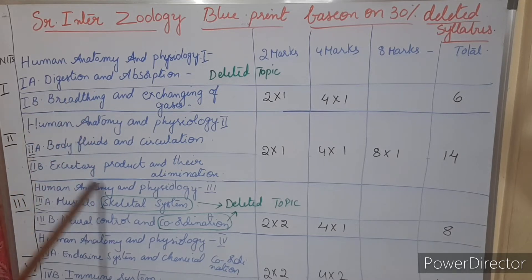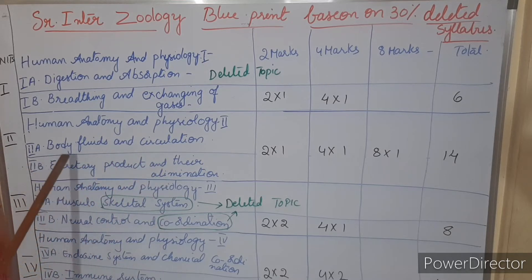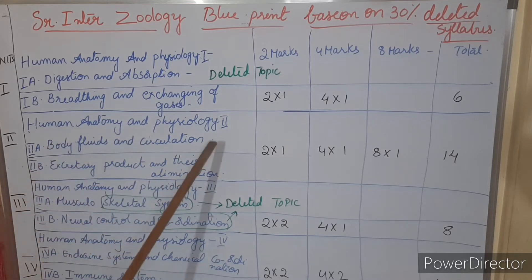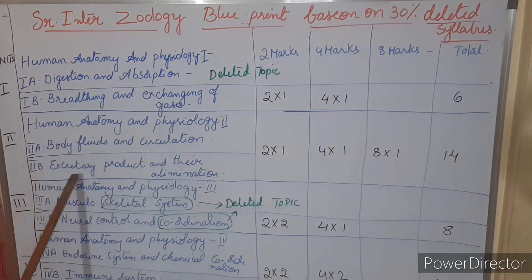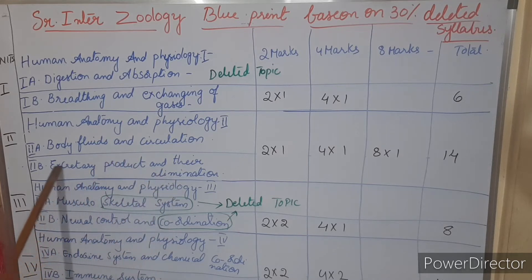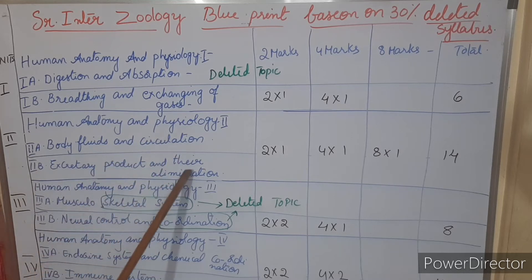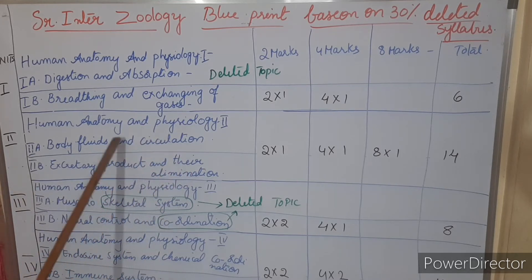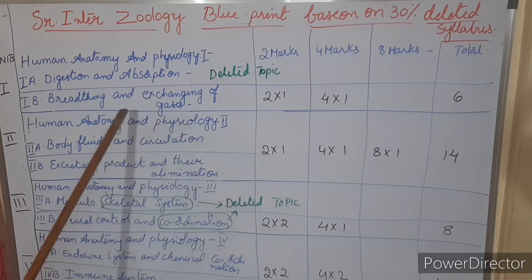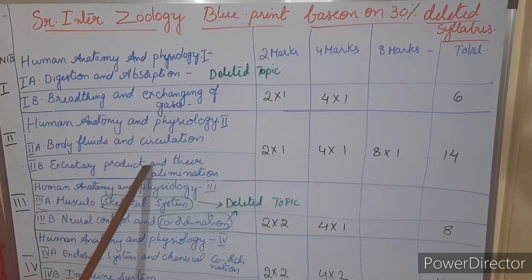The next chapter is Unit 2 — Human Anatomy and Physiology 2. In this unit we have 2A: Body Fluids and Circulation, and 2B: Excretory Products and Elimination. From these two sub-units, we may get one two-mark question — it may come from either 2A or 2B.